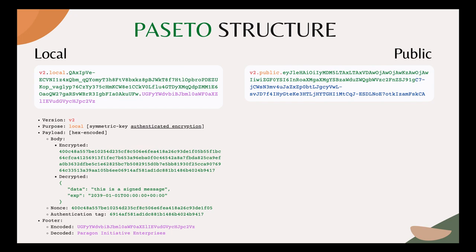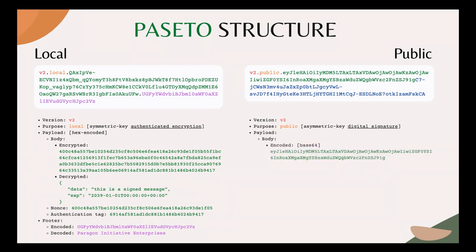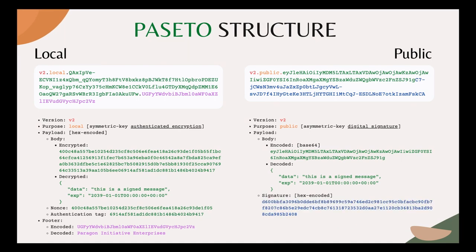For example, here is another PASETO token for a public usage scenario. It only has 3 parts with no footer. The first part is the PASETO version, which is version 2. The second part is the purpose, which is public — meaning an asymmetric key digital signature algorithm is used to sign the token, and its payload data won't be encrypted but only base64 encoded. As you can see, the green part of the payload is the encoded body, which we can easily decode to get this JSON object. While the blue part of the payload is the signature of the token, created by the digital signature algorithm using the private key. The server will use its paired public key to verify the authenticity of this signature.